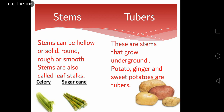Some stems are also used as vegetables. Stems can be hollow or solid, round, rough or smooth. Stems are also called leaf stalks. Celery and sugarcane are the examples of stems that are used as vegetables.